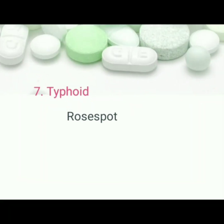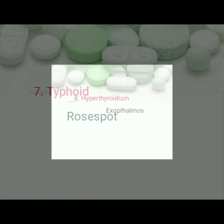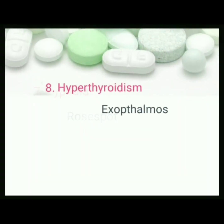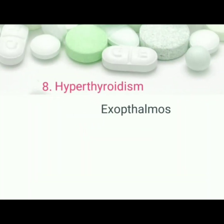Typhoid: pathognomonic sign is rose spot. Hyperthyroidism: pathognomonic sign is exophthalmos.